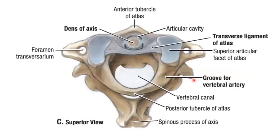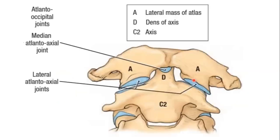Here you can see the atlanto-axial joint. This is the lateral mass of the atlas, this is the dens, and this is the axis. This shows the median atlanto-axial joint and the lateral atlanto-axial joint — both parts of the atlanto-axial joint complex.